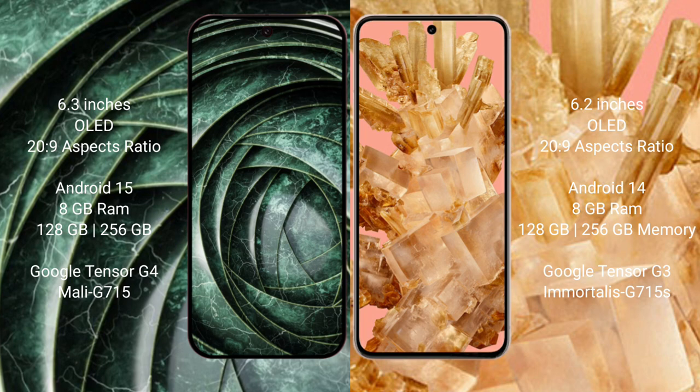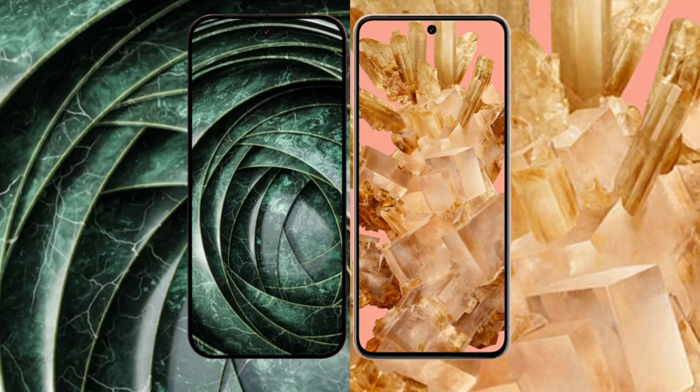Google Pixel 9a comes with 8GB RAM and 256GB internal storage, powered by the Google Tensor G4 processor. Google Pixel 8 comes with 8GB RAM and 256GB internal storage, powered by the Google Tensor G3 processor with Immortalis-G715s GPU.